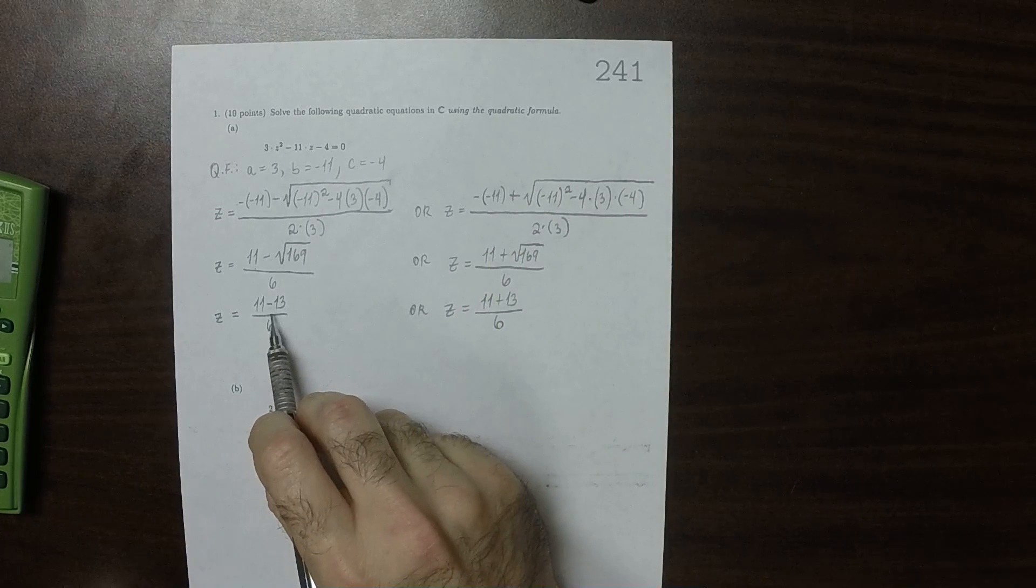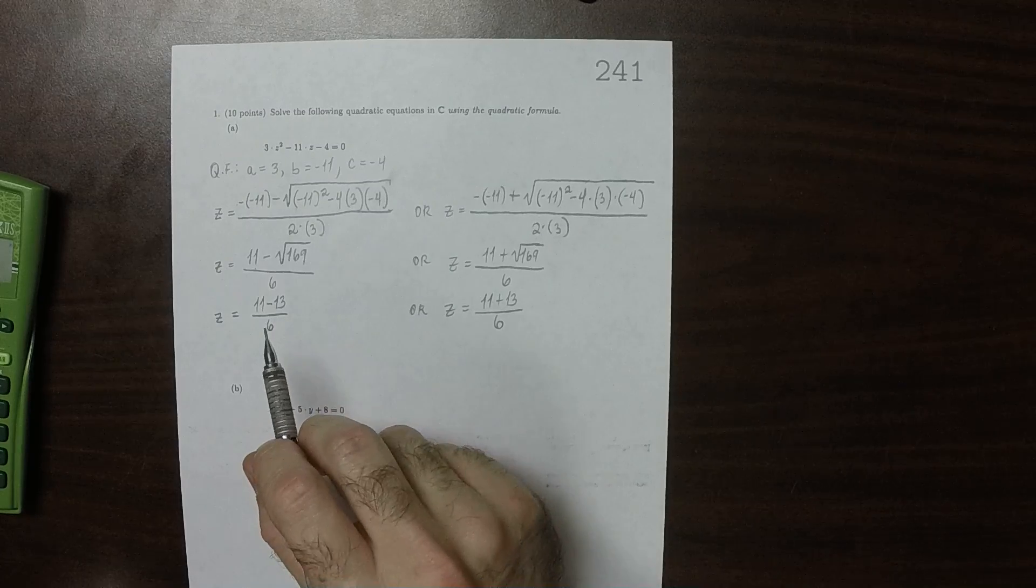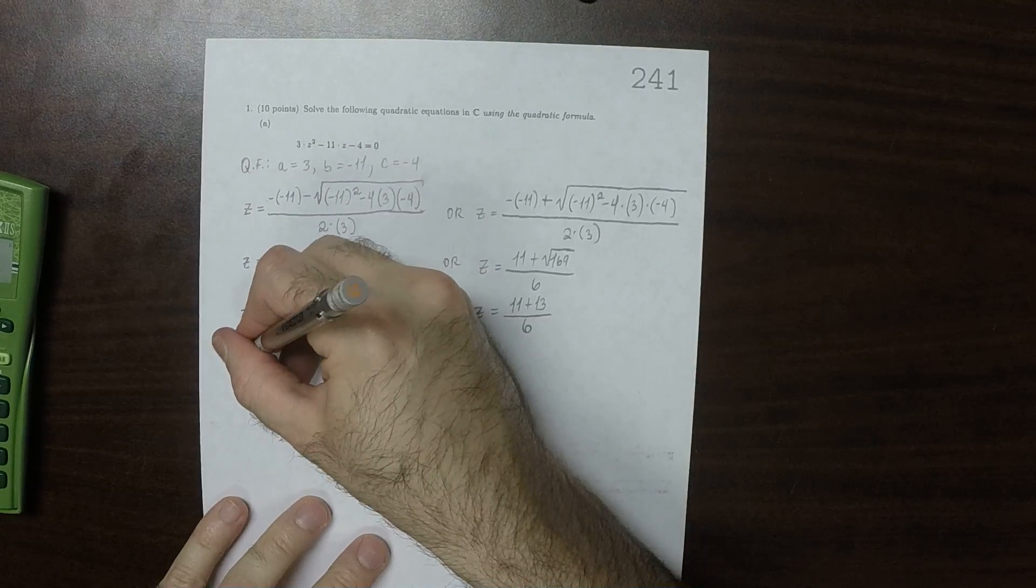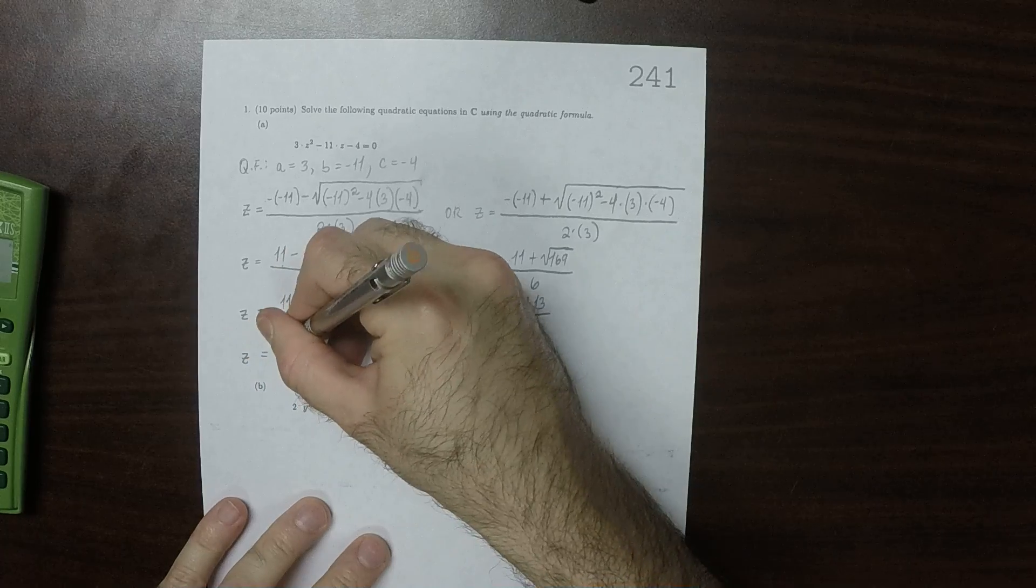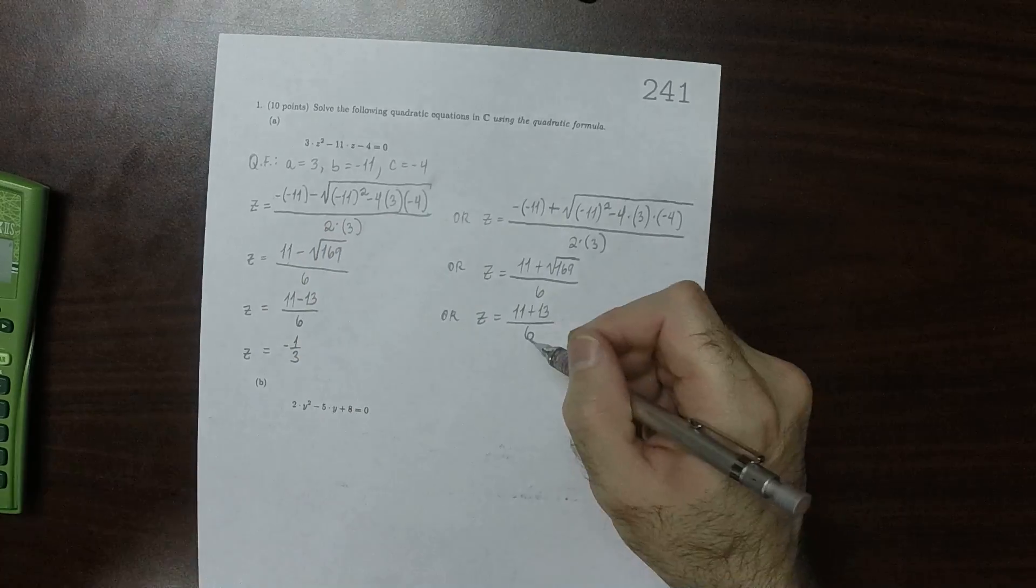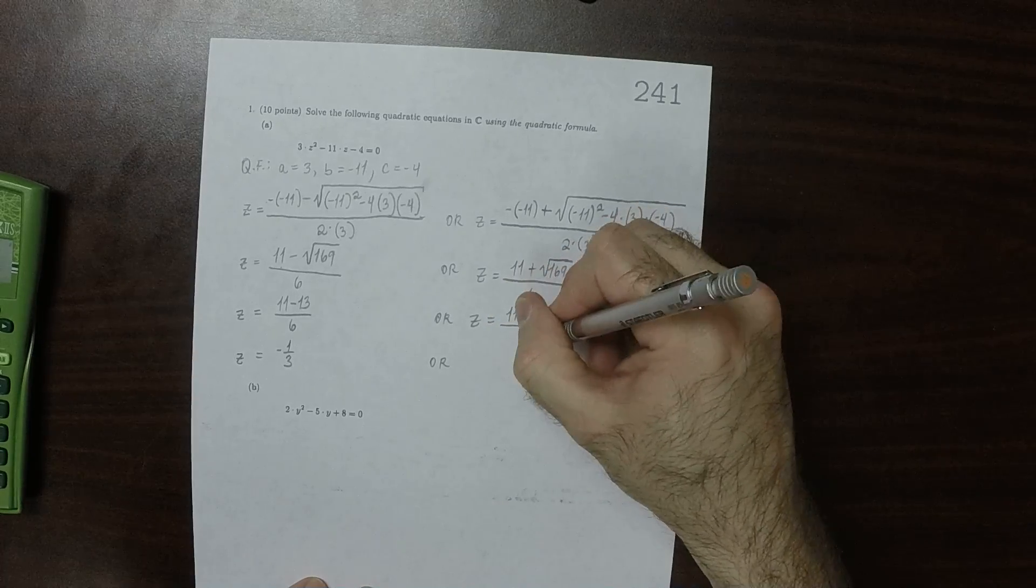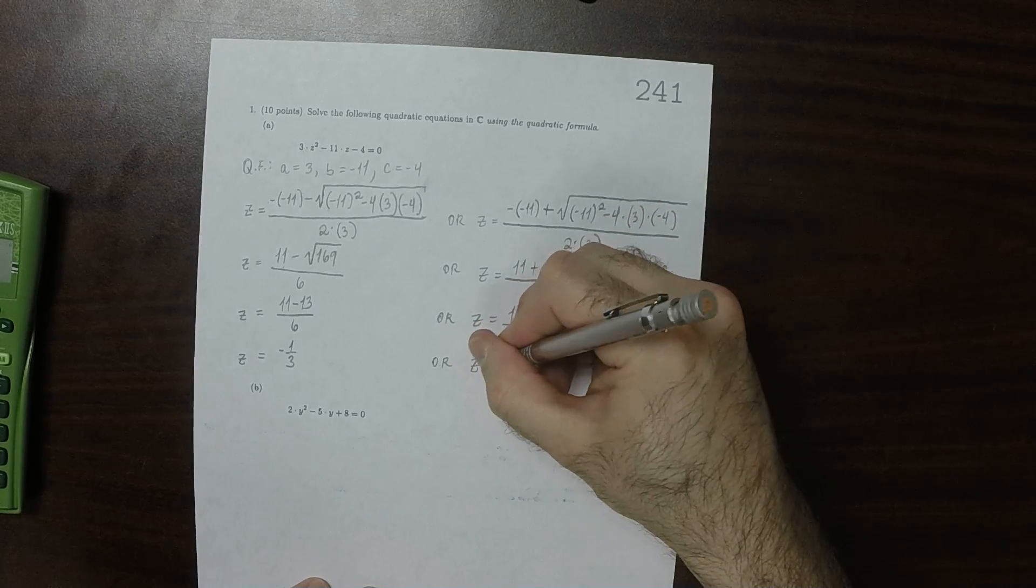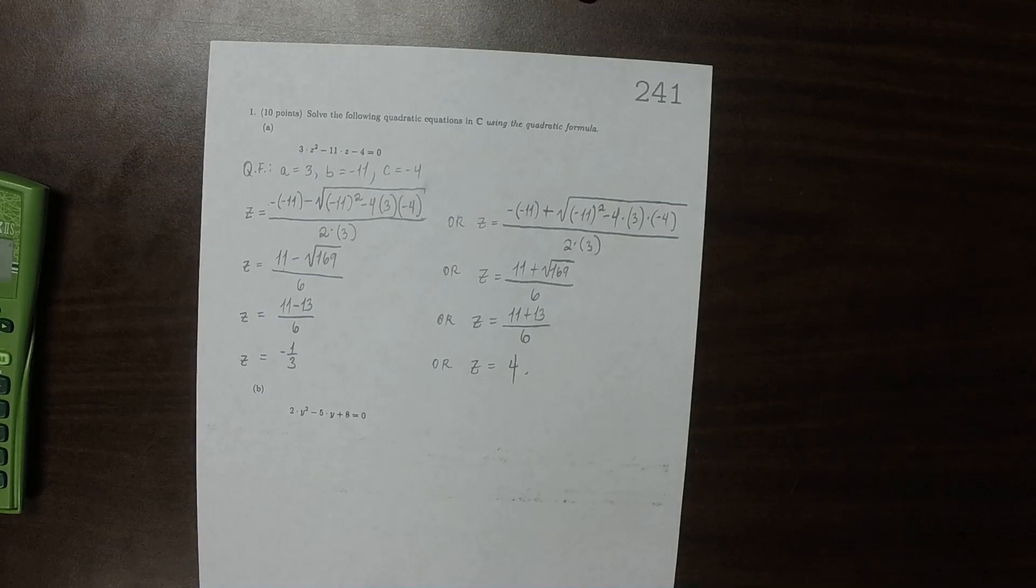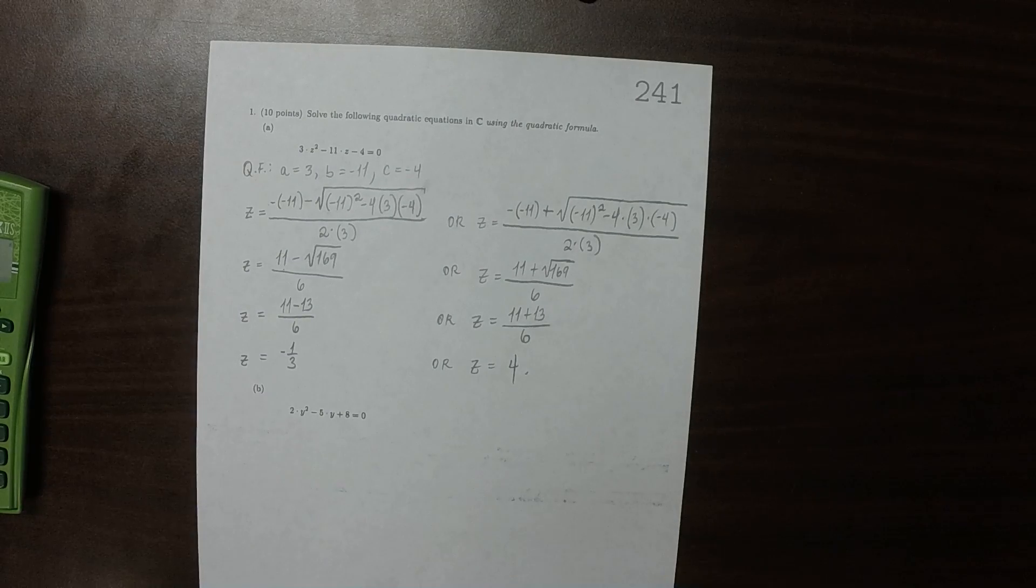So this one would be negative 2 over 6, so that'd be negative 1 third. And this one, that's 24 over 6, so that'd be 4.